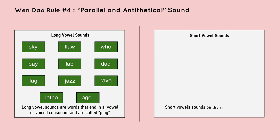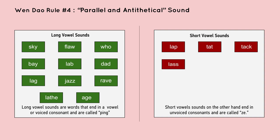Short vowel sounds, on the other hand, end in unvoiced consonants and are called ze. Lap, tat, tack, lass, laugh, latch, path.